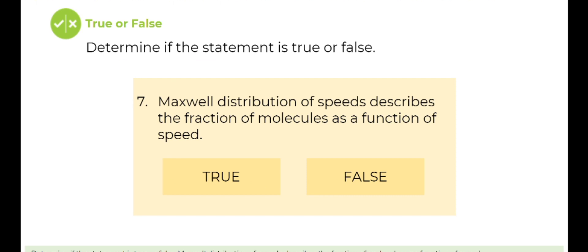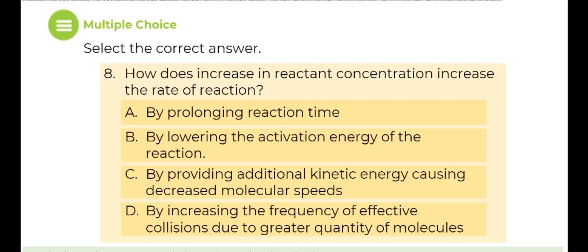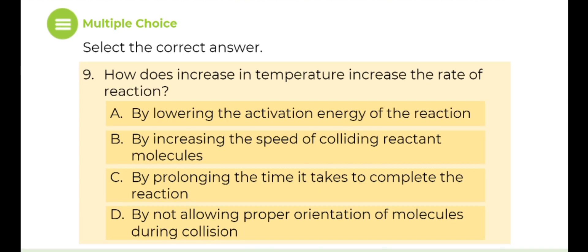Number seven. Determine if the statement is true or false. Maxwell distribution of speeds describes the fraction of molecules as a function of speed. Number eight. How does increase in reactant concentration increase the rate of reaction? Number nine. How does increase in temperature increase the rate of reaction?